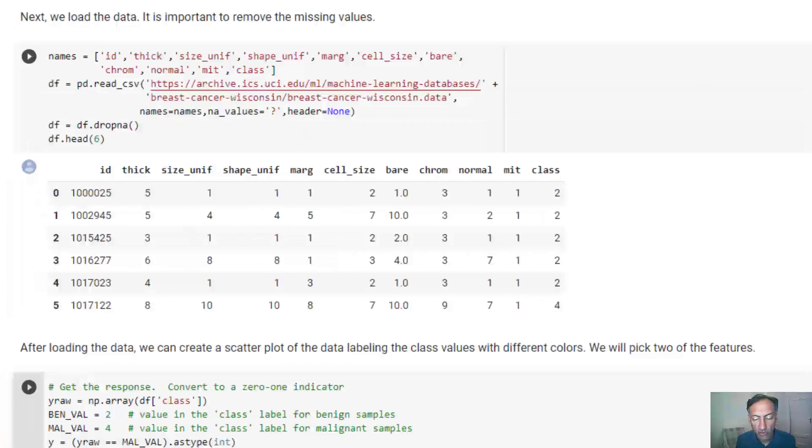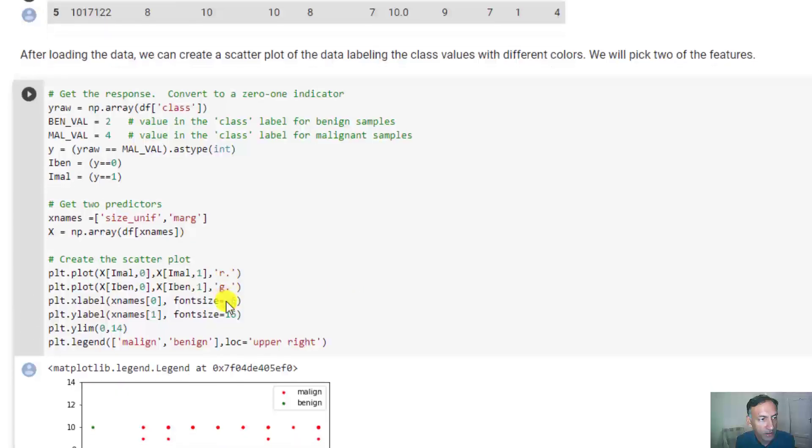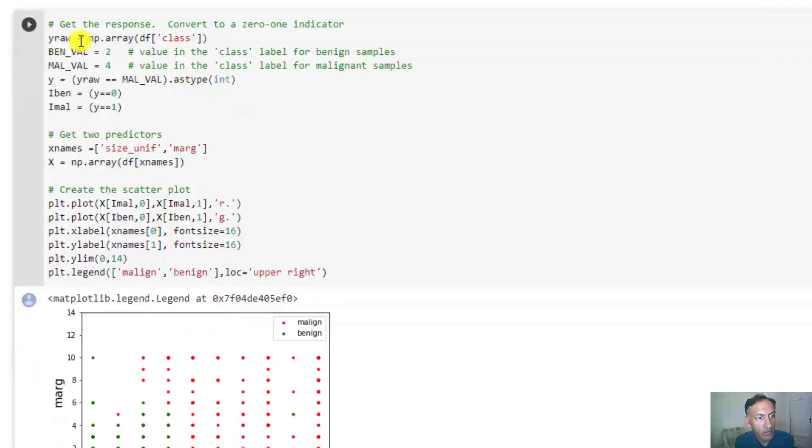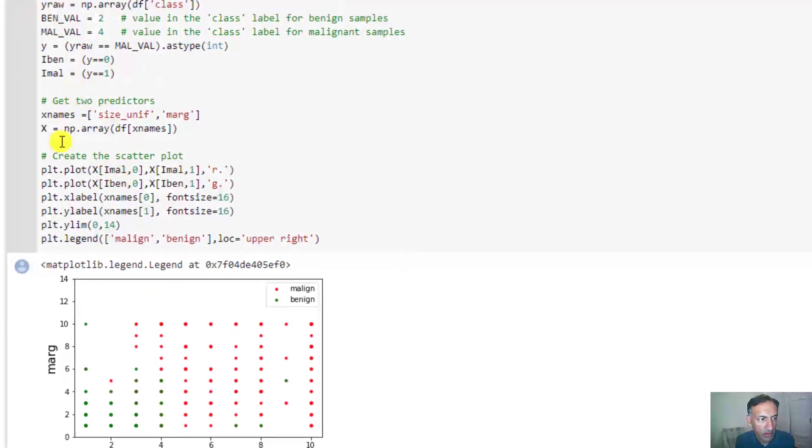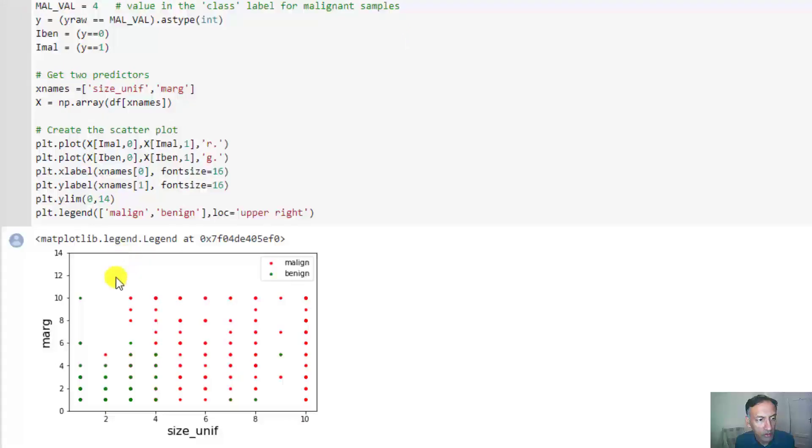Now let's try, just to get a sense of the data, to do a simple visualization. First, because the class is either 2 or 4, the first part just converts it to 0 and 1. Then there's some plotting, which creates the following kind of useful graph.